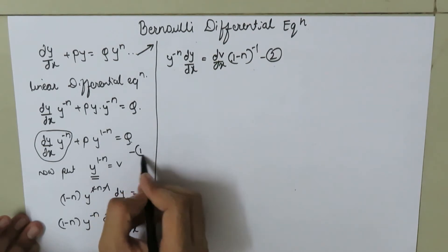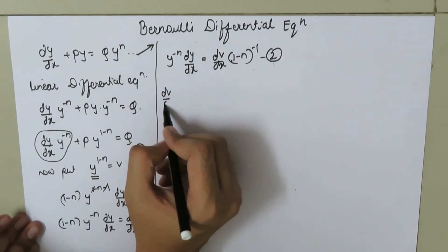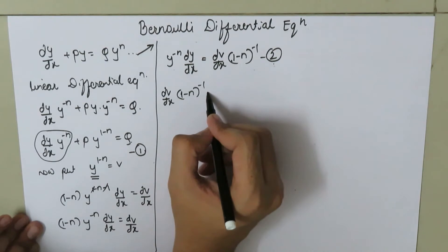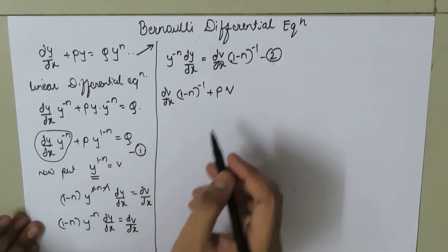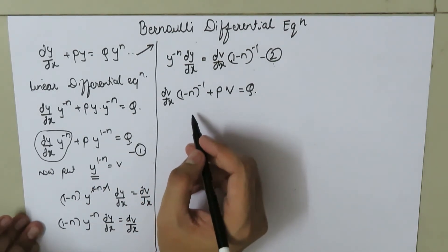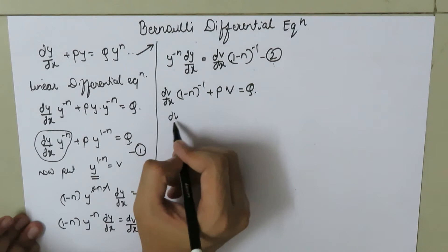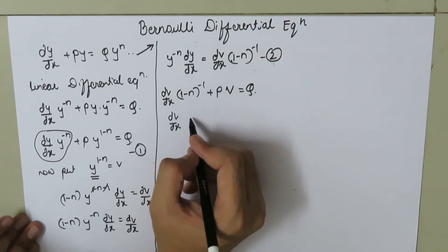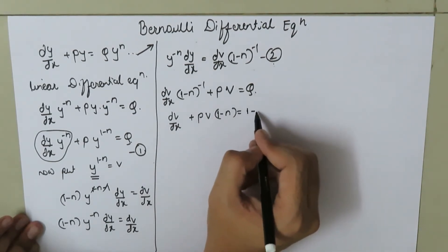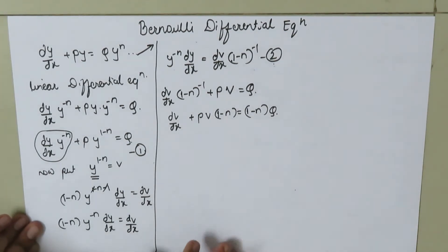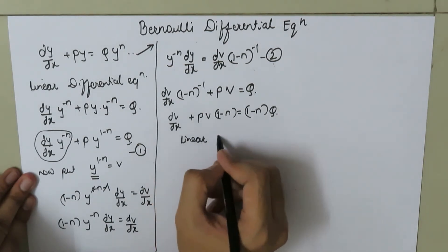We substitute equation number 2 into equation number 1, giving us dv/dx times (1 minus n) to the power negative 1 plus p times v equals q. Multiplying through by (1 minus n), we get dv/dx plus p times v times (1 minus n) equals (1 minus n) times q. This equation is now a linear differential equation.